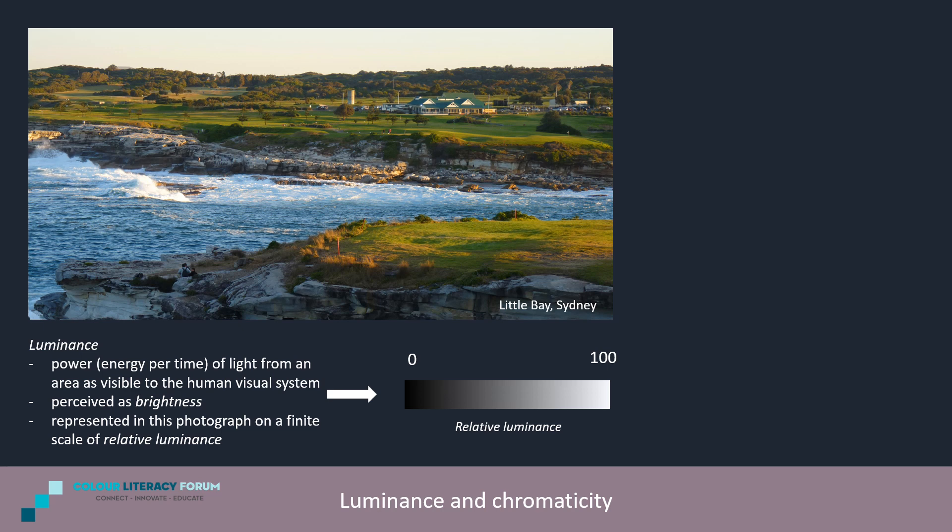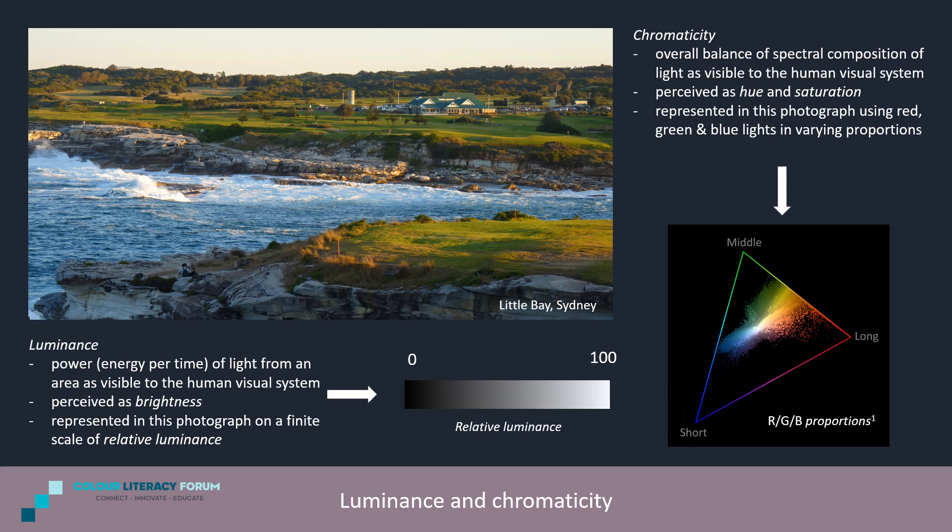Variations in luminance appear to us as variations in brightness, and are represented in this photograph on a finite scale of relative luminance determined by the exposure setting I chose. Chromaticity is the overall balance of spectral or wavelength composition of a light, again as visible to the human visual system. Variations in chromaticity appear to us as variations in hue and saturation, and are represented in the pixels of my photograph by varying proportions of red, green and blue lights.